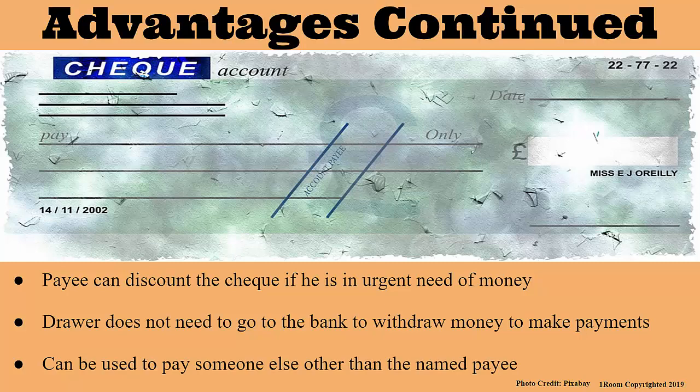Meaning? In the simplest of terms, the bank gives the payee the money, but first the bank deducts its discount. Moving on, cheques are good because the drawer does not have to go to the bank to withdraw money so as to make payments. Finally, cheques can be used to pay a third party — that is, someone else other than the named payee.